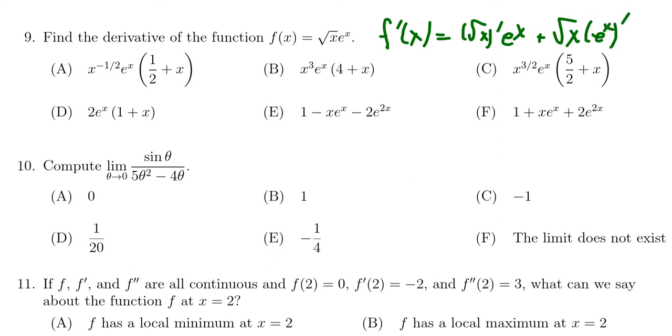The derivative of the square root of x, that's one you might just have memorized. You've done it so often that the derivative of the square root of x is going to be one over two times the square root of x. Then you get e to the x.